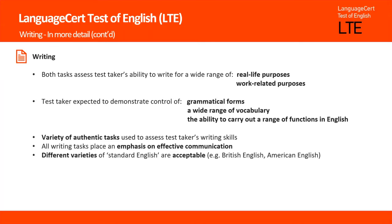Both writing tasks assess the test taker's ability to write for a wide range of real-life purposes and work-related purposes. The test taker is expected to demonstrate control of grammatical forms, a wide range of vocabulary, as well as the ability to carry out a range of functions in English. A variety of authentic tasks is used to assess the test taker's writing skills and all writing tasks place an emphasis on effective communication. Candidates can select any variety of standard English such as British English or American English.